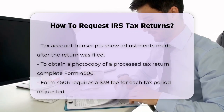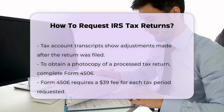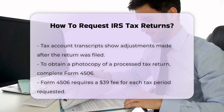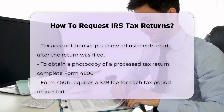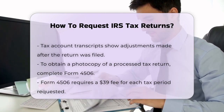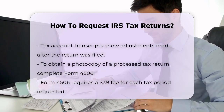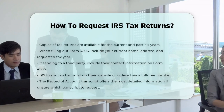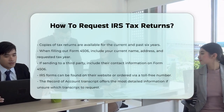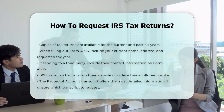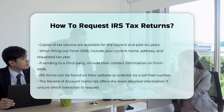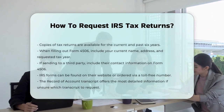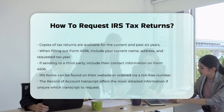When filling out Form 4506, make sure to include your current name, address, and the year or period of the tax return you're requesting. If the return needs to be mailed to a third party, like a mortgage company, you'll need to include their name, address, and phone number.